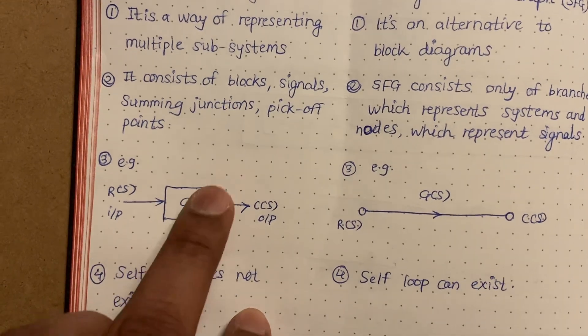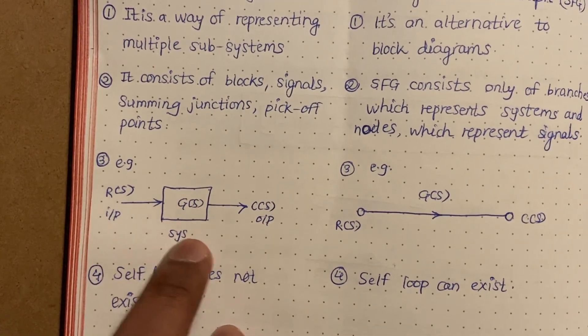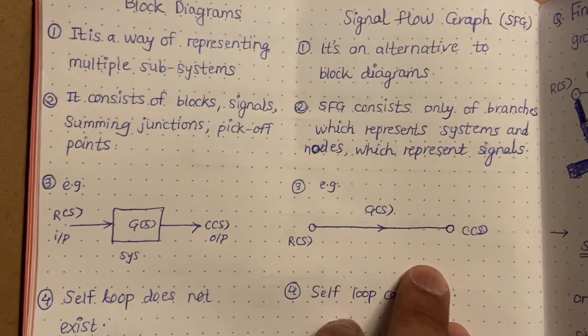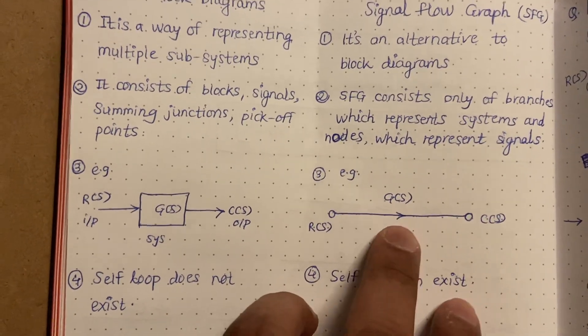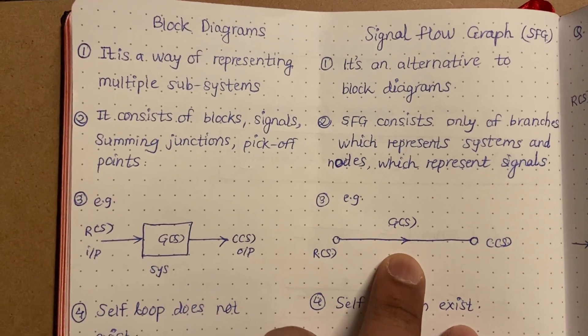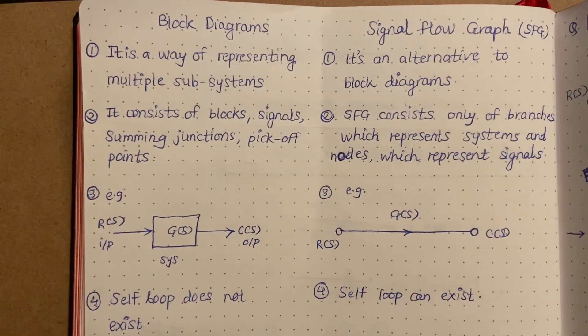So we can see the example. We have this as a block diagram - output, input, right? And in case of signal flow graph, we have node and we have signal. So this is how signal flow graph looks like.